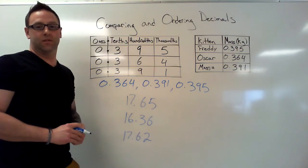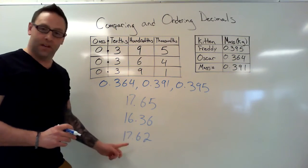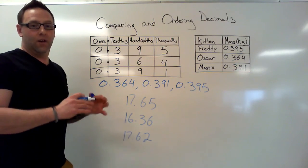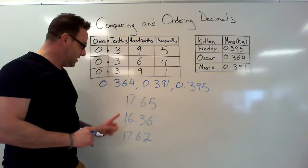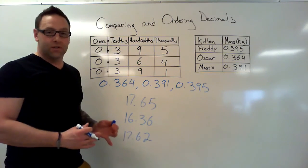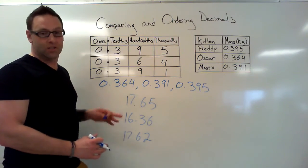Now we can't forget about the stuff we already know in terms of these numbers here. Which number is the smallest? Well, we don't have to look at the decimals yet because we know that 16 is smaller than 17. So we're going to list these from least to greatest: 16.36.